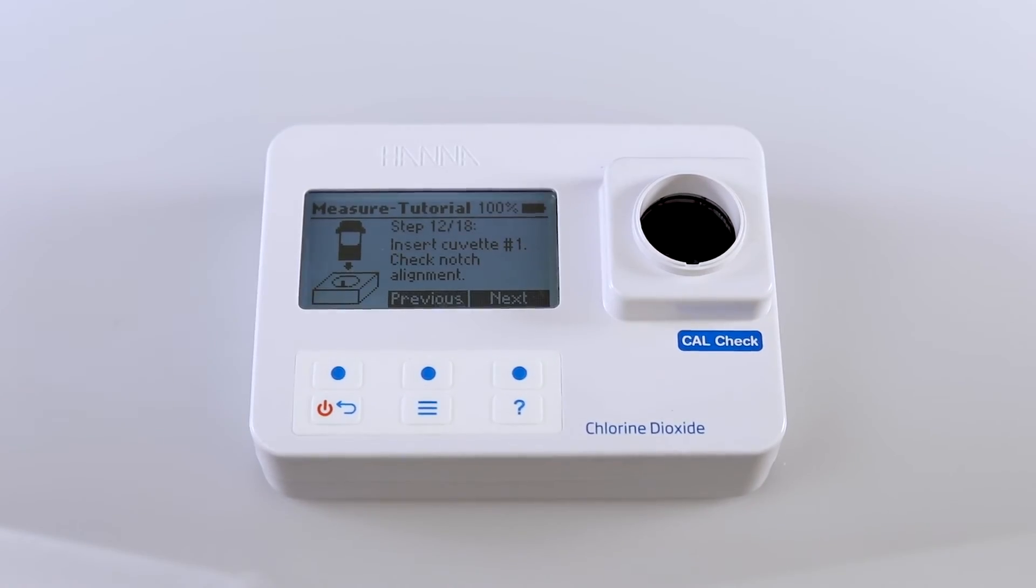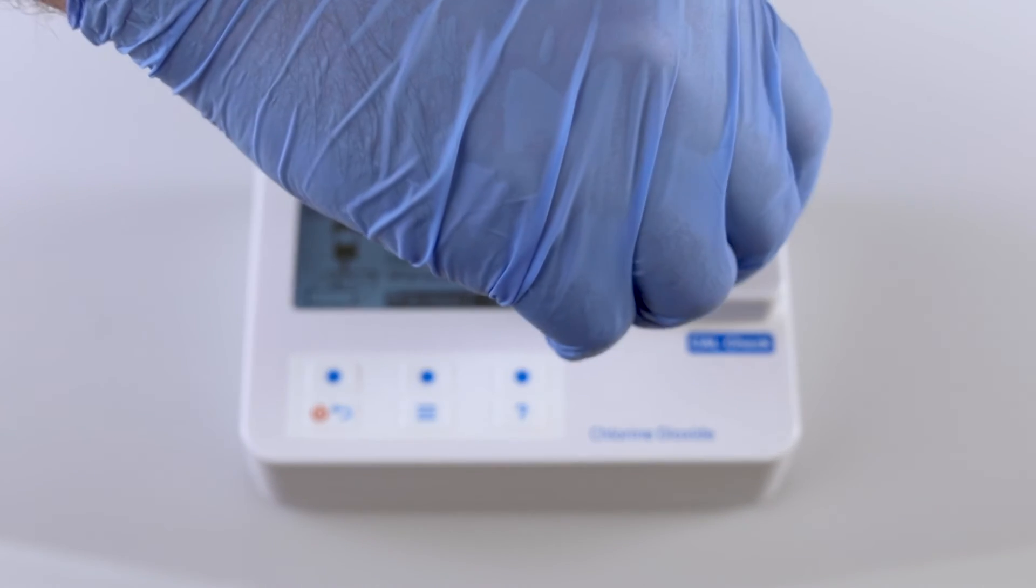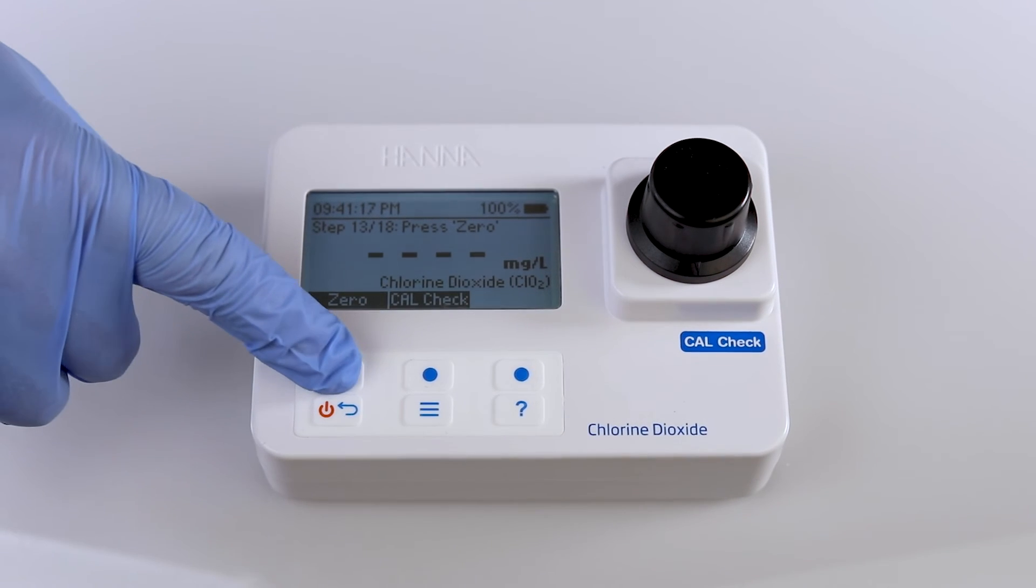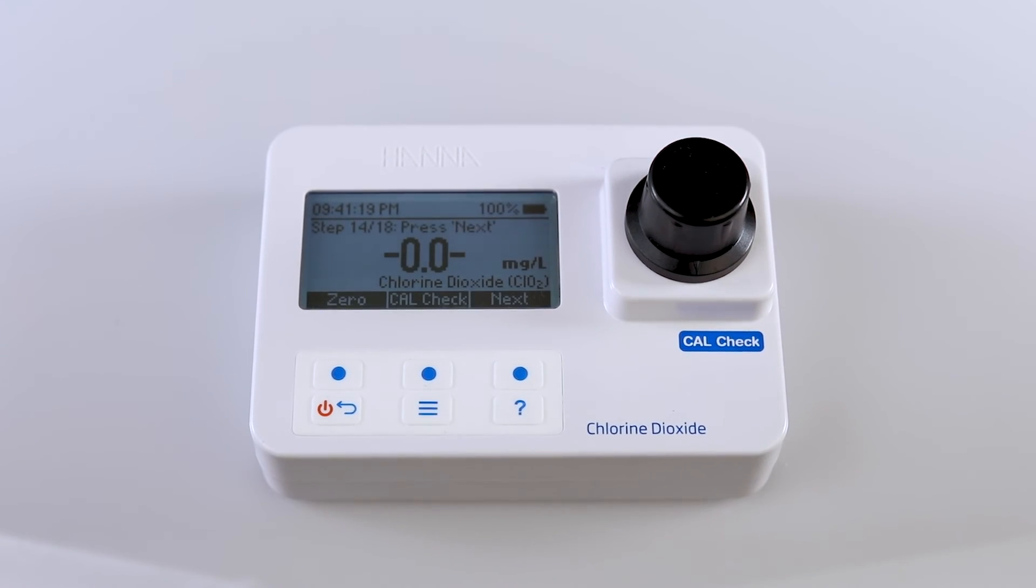Once finished, insert cuvette number one containing your blank sample into the holder on your photometer, ensuring that the notch on the cap is positioned securely in the groove. Press 0. The display will show 0.0 when the meter is zeroed and ready for measurement.